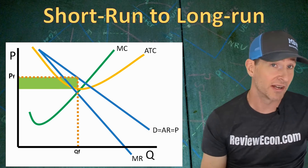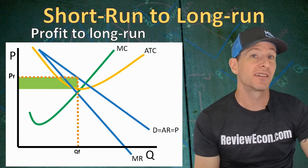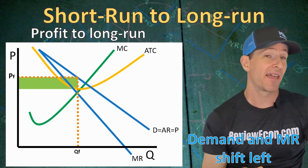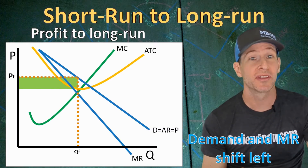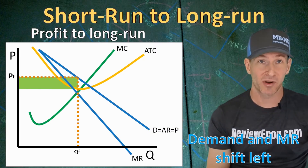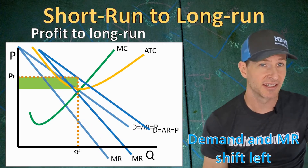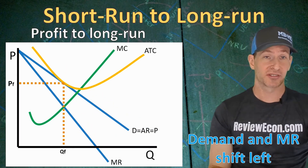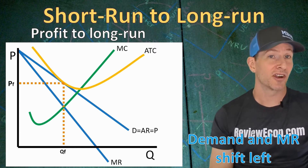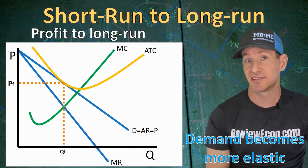Now we'll discuss how we get to long run equilibrium from economic profits and losses. Starting from economic profit: in the long run, firms enter the market seeking that profit, shifting the demand and marginal revenue curves to the left. As more firms enter, there are more substitutes available, decreasing each individual firm's market share. When the demand curve shifts left far enough to become tangent to the ATC at the profit maximizing quantity, the firm breaks even. Also, as firms enter, the demand curve becomes more elastic because more substitutes means more elastic demand.